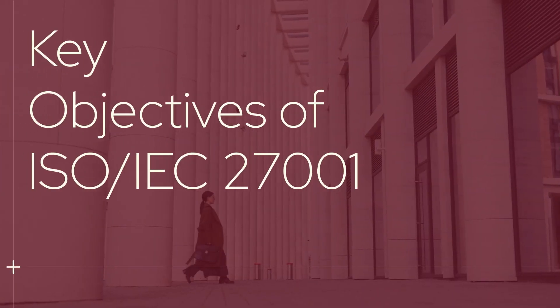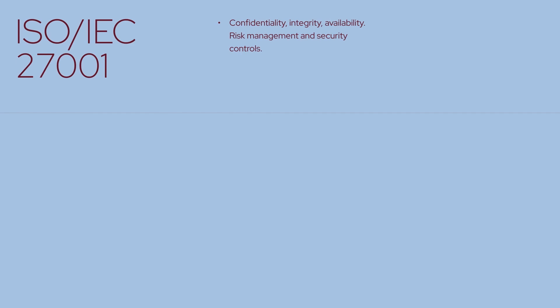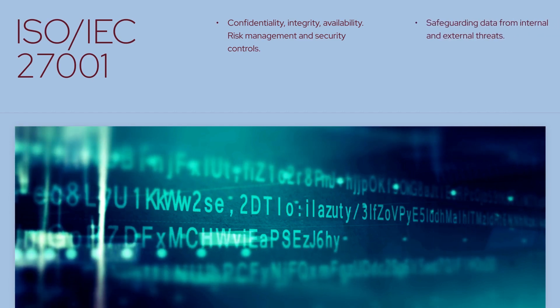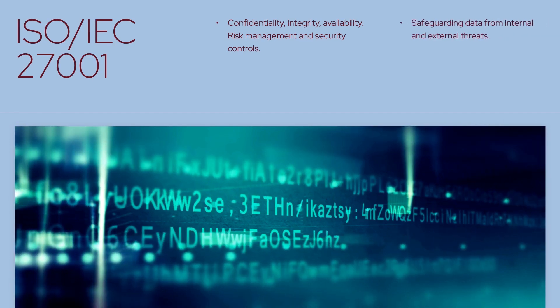Key Objectives of ISO IEC 27001. The primary objective of ISO IEC 27001 is to ensure the confidentiality, integrity, and availability of information. The framework achieves this through risk management and the implementation of appropriate security controls. The ultimate goal is to safeguard an organization's data from security threats, both internal and external.